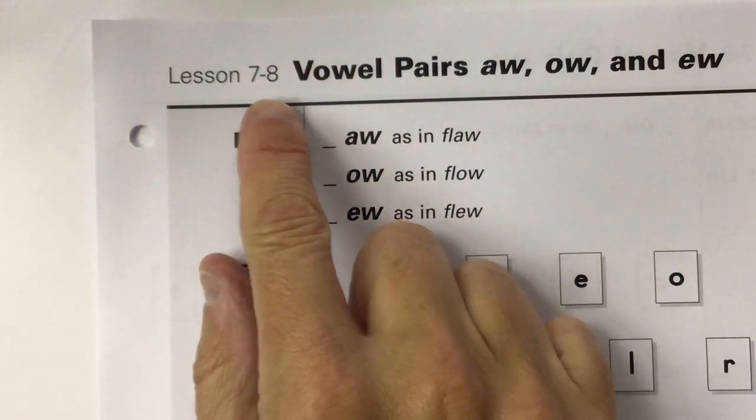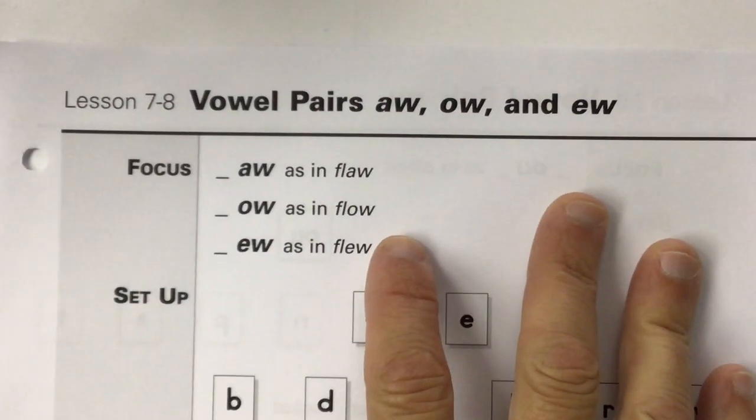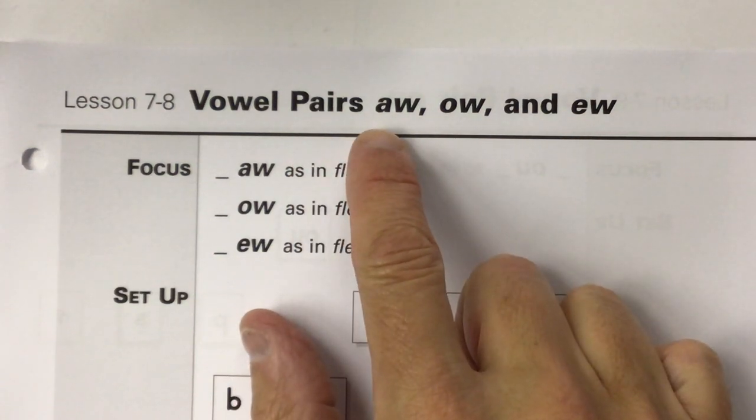Here we go with lesson 7-8. We're going to review three vowel pairs that we've worked on in the last three lessons.